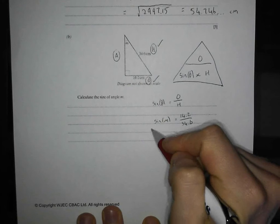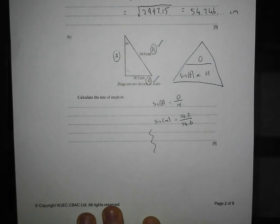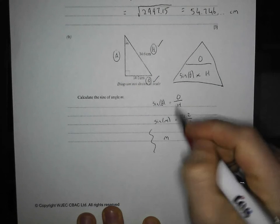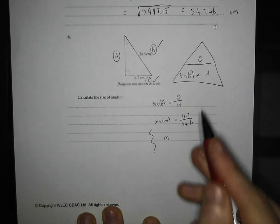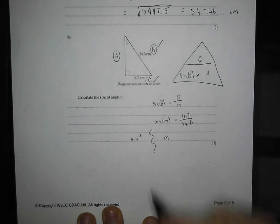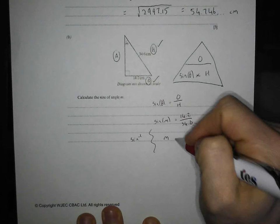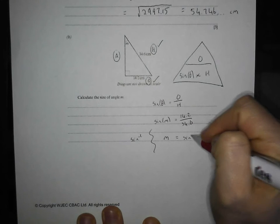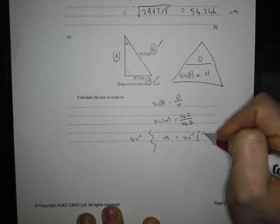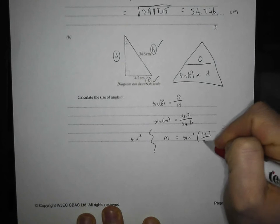And now this is just like an equation. I don't want to know what sin M is. I want to know what M is. So to get rid of a sine from both sides of the equation, I need to do the inverse, which is just sine to the minus one. Just like to get rid of a times, you need to do the inverse, which is divide. So M equals sine to the minus one of 14.2 divided by 34.6.